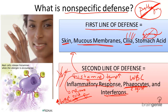And finally, interferons. Interferons target specific invaders such as viruses. They are chemicals released by invaded cells to signal to other cells that they should start mechanisms to defend themselves against a virus.